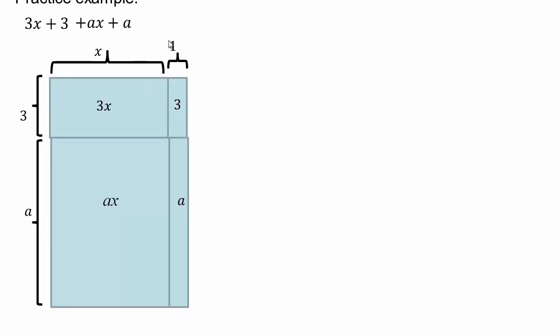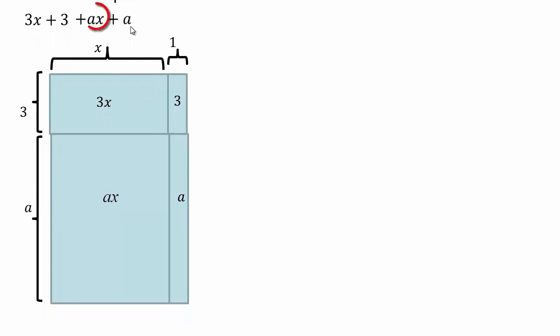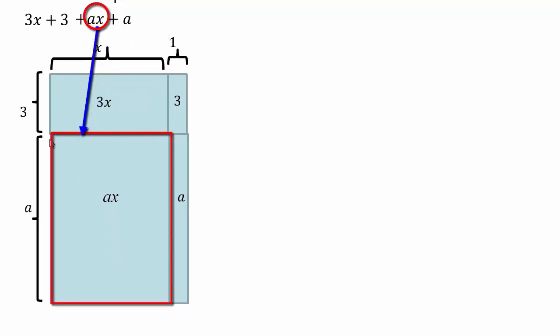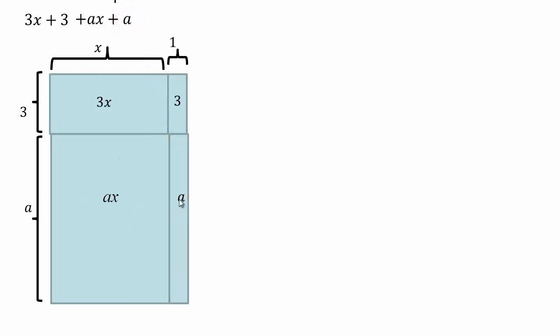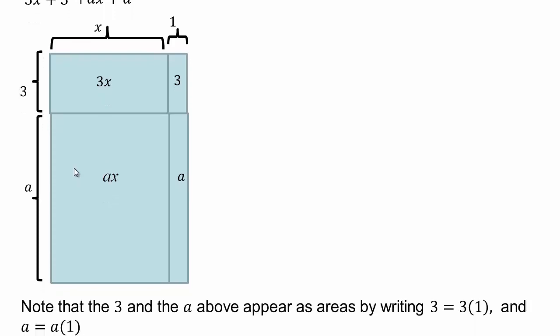If I said plus ax plus a, then I'm adding more rectangles with width a and length x, and width a and length 1. So this is area a times x and this is area a times 1. Now we have all four pieces together making a rectangle. 3 is the same as 3 times 1 and a is the same as a times 1 — that allows us to make rectangles of area 3 and of area a.